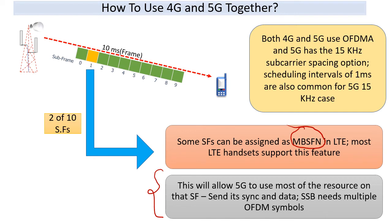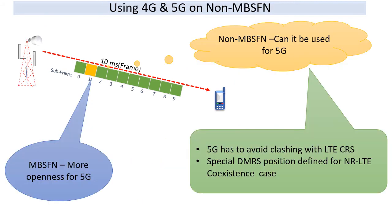Apart from both 4G and 5G using 15 kHz subcarrier spacing, we will most likely use a lot of MBSFN subframes to accommodate 5G synchronization signals. But since traffic requirements on 5G can be quite high at times, we also need to accommodate traffic on non-MBSFN subframes. There, there's a bit of rigidity on the LTE side because LTE has its cell-specific reference signals (CRS) which can't be tampered with. Additionally, 5G also has certain reference signals called DMRS which are not as flexible as other elements.